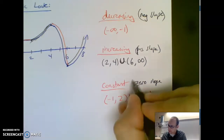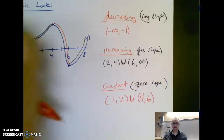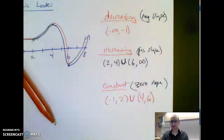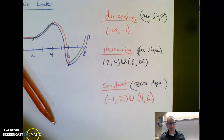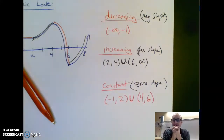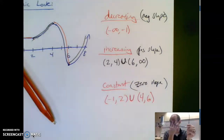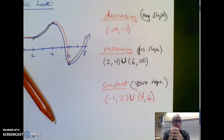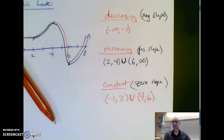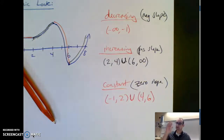Increasing is when you have a positive slope, and constant is when you have a zero slope. Why am I talking about slopes? Because derivatives find slopes. This whole unit is about being able to graph equations perfectly with the help of calculus — you'll be more precise at graphing than ever before, because you can tell when a graph is increasing or decreasing just by looking at its derivative.